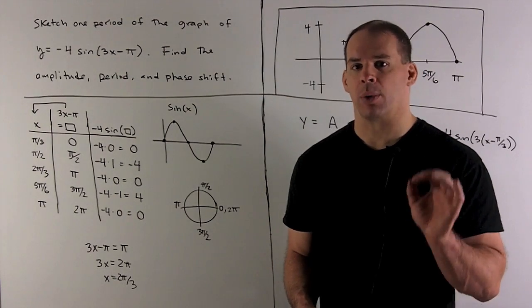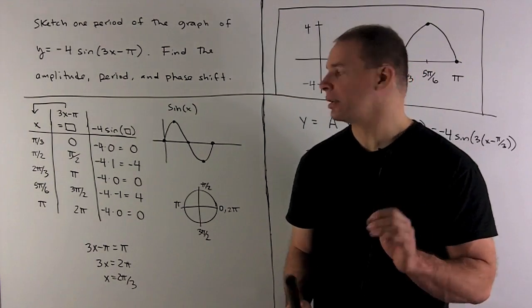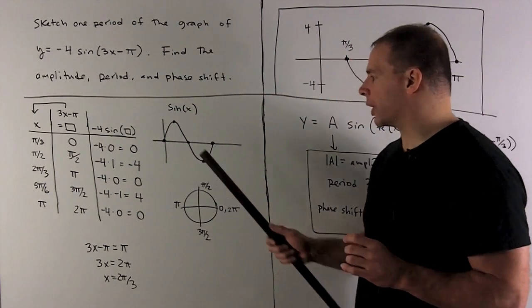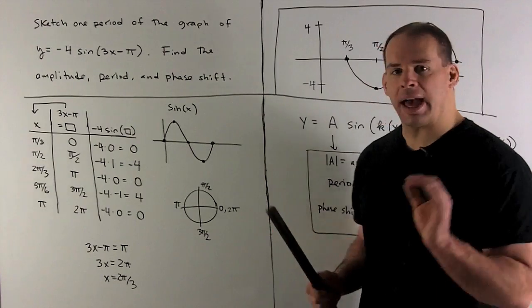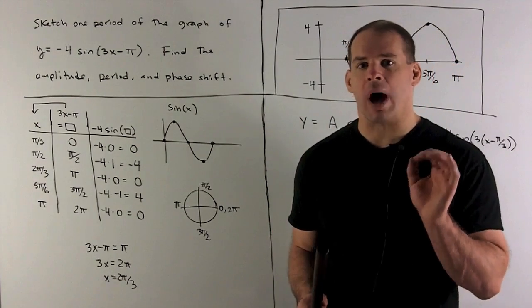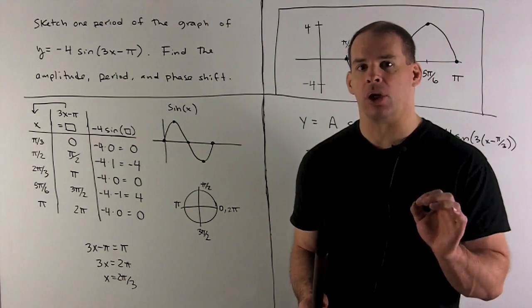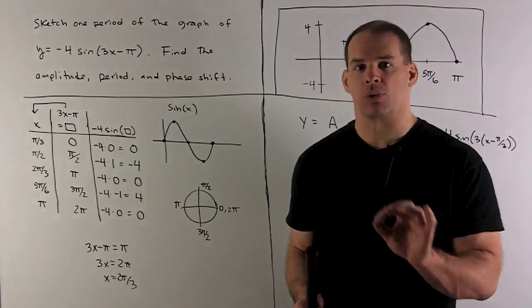First, I want to sketch sine of x. Here's sine of x. How do we get that? Well, sine is going to be the y value of your angle on the unit circle.